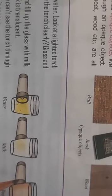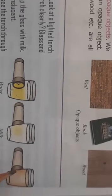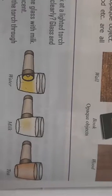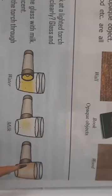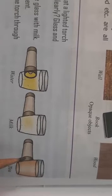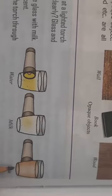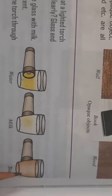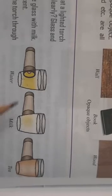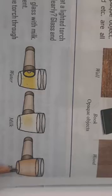And finally, in the next glass, fill it with tea and again put a lighted torch and try to see through that glass. You will see that you are not able to see anything through that glass, because tea is opaque. So water is transparent, milk is translucent, and tea is opaque.